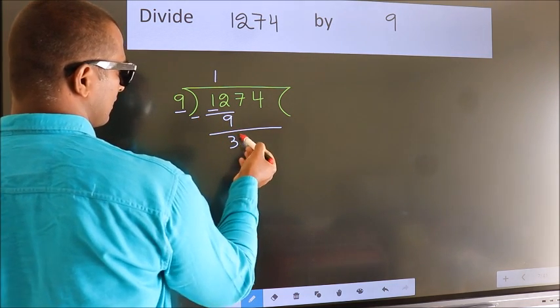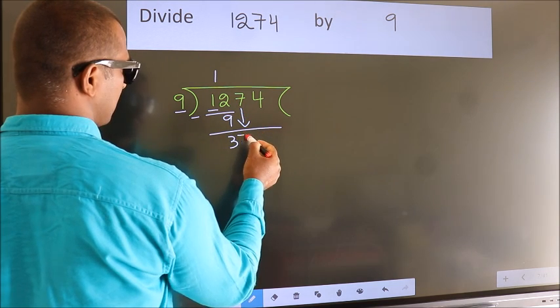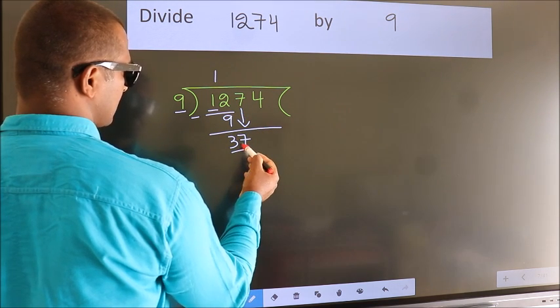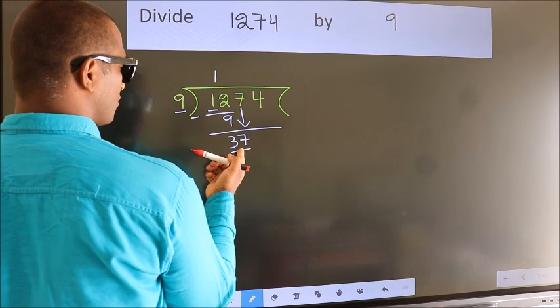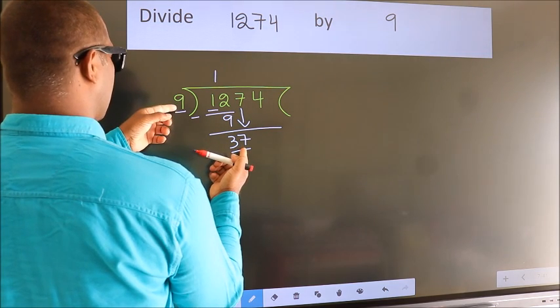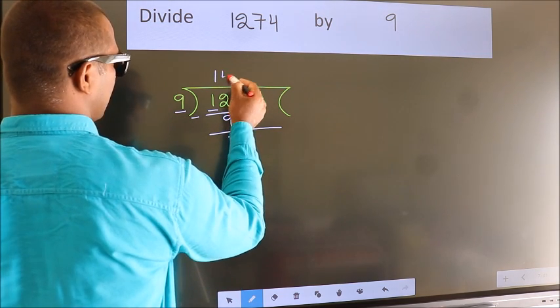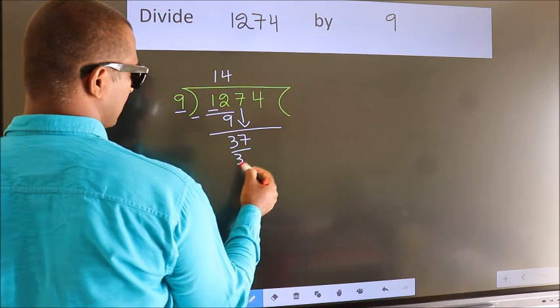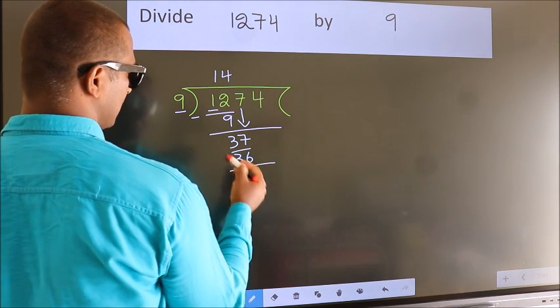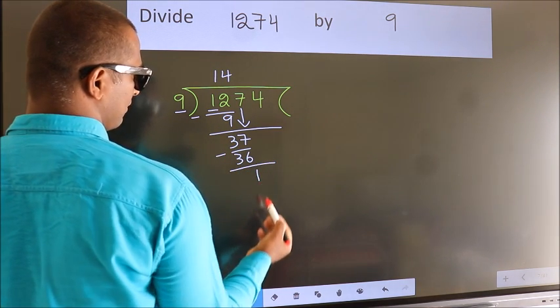After this, bring down the next number. So 7 down. So 37. A number close to 37 in the 9 times table is 9 fours 36. Now we subtract. We get 1.